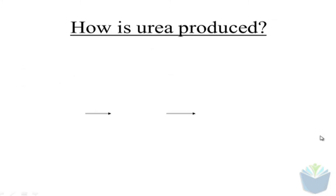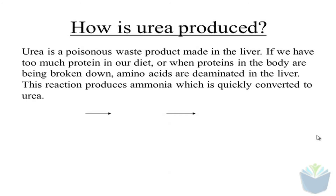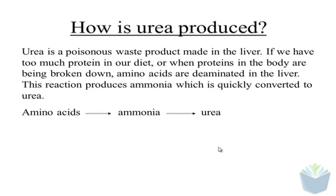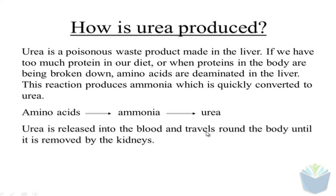The kidneys are involved in excretion, primarily of urea. Urea is a poisonous waste product and it's made within the liver. When we eat proteins, proteins are made up of amino acids. If we've got an excess of proteins, they need to be broken down and gotten rid of. The excess proteins are broken down into their individual monomers, which are amino acids. These are then converted into ammonia through a process known as deamination. That's then converted into urea, and urea is released into the blood where it travels around the body until it's removed by the kidneys.